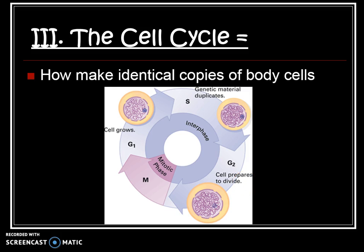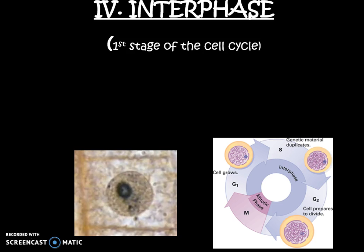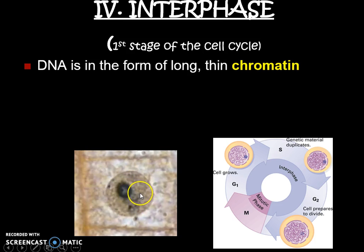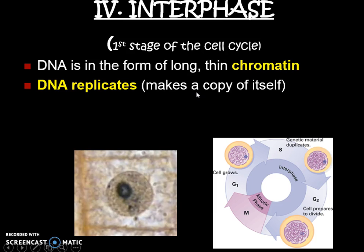Our first and longest stage is interphase, which we learned last class. In this picture of a plant cell under a microscope, here's the nucleus. I don't see any X shapes, so my DNA is in that long thin stringy version — chromatin. I like to think this looks like an eyeball, and that's what I look for to find interphase examples.